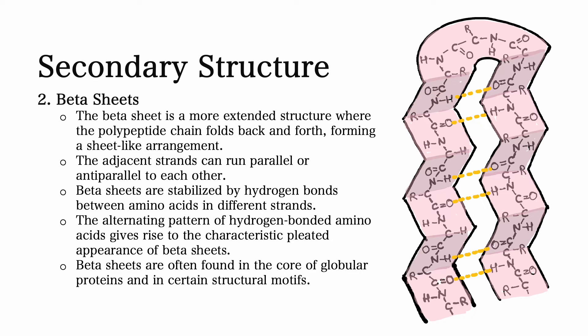The alternating pattern of hydrogen-bonded amino acids gives rise to the characteristic pleated appearance of beta sheets. So sometimes beta sheets are also called beta-pleated sheets. Beta sheets are often found at the core of globular proteins as well and in certain structural motifs.